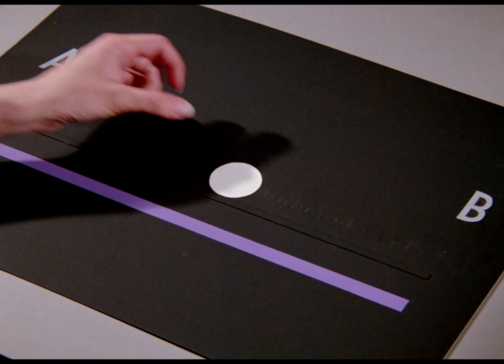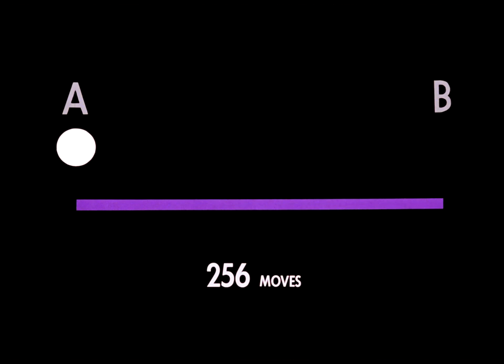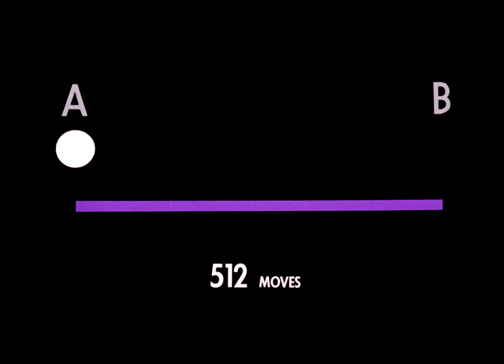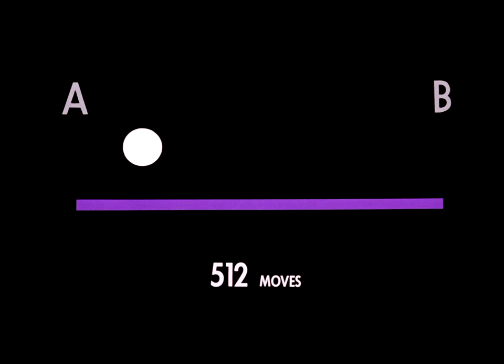Two hundred and fifty-six moves from A to B. Five hundred and twelve moves from A to B. Each tempo has its own character or mood. Compared with the earlier frantic tempos, this one is peaceful.